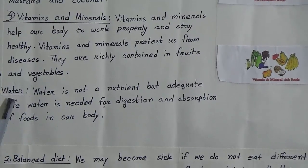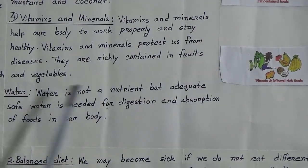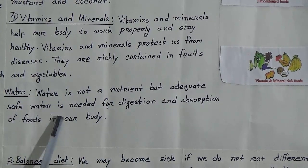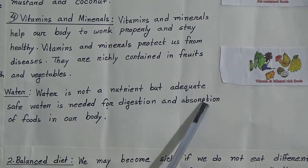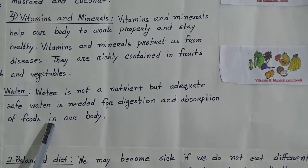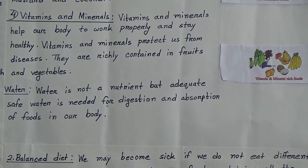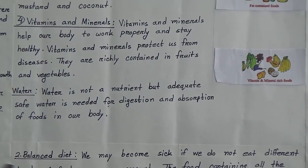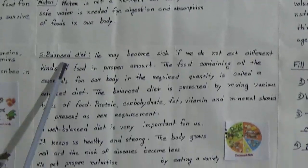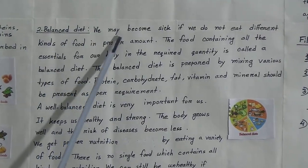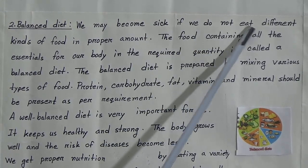Water — water is not a nutrient, but adequate safe water is needed for digestion and absorption of food in our body. Now we will learn about balanced diet. We may become sick if we do not eat different kinds of food in proper amounts.